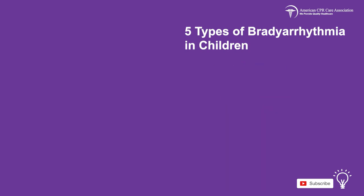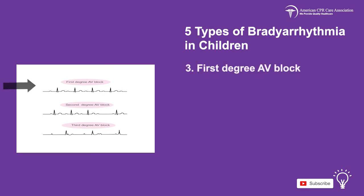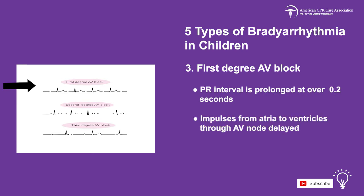The third type of bradycardia is first-degree AV block. This is where the PR interval is prolonged at more than 0.2 seconds, and impulses from the atria to the ventricles through the AV node are delayed. There are usually no symptoms associated with first-degree AV block that would signal an emergency situation.